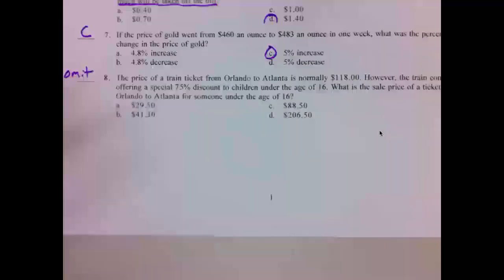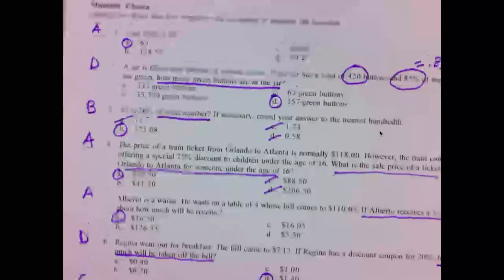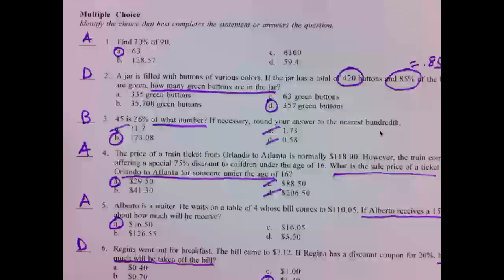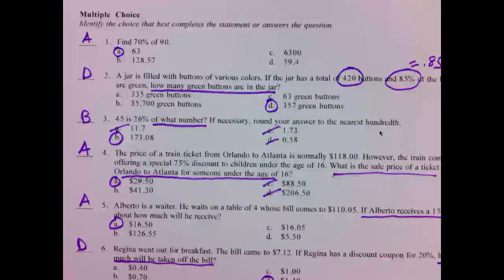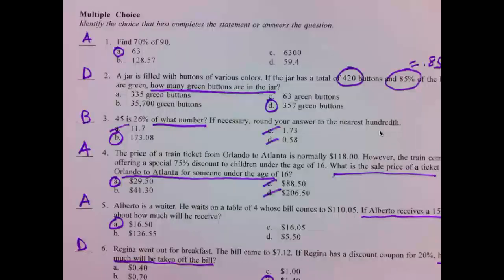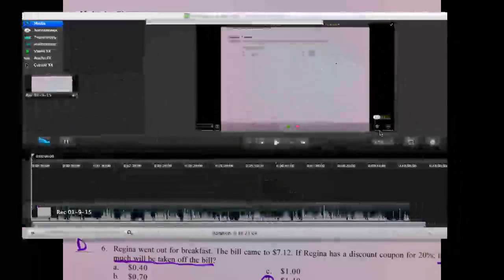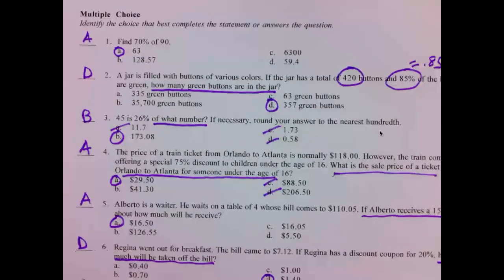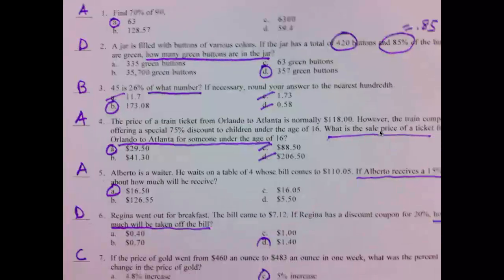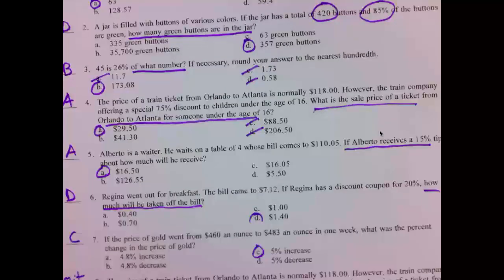Going back to the beginning: 1 is A, 2 is D, 3 is B, 4 is A, 5 is A, 6 is D, 7 is C.